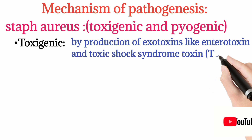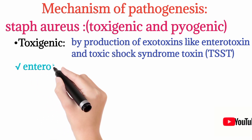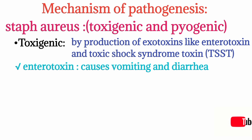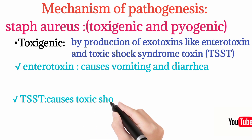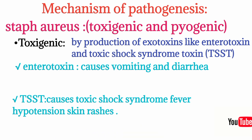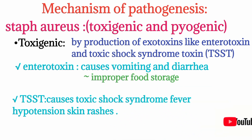Enterotoxin is responsible for causing vomiting and diarrhea. Toxic shock syndrome toxin causes toxic shock syndrome, which is characterized by high fever, low BP (hypotension), and skin rashes. Enterotoxin pathogenesis is caused by improper food storage, and it can be prevented by refrigerating food.